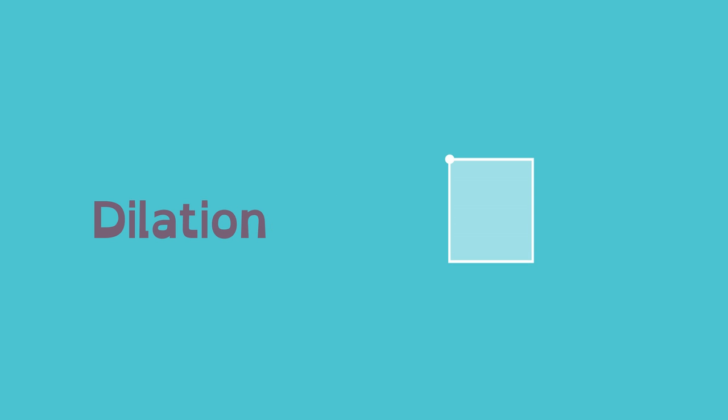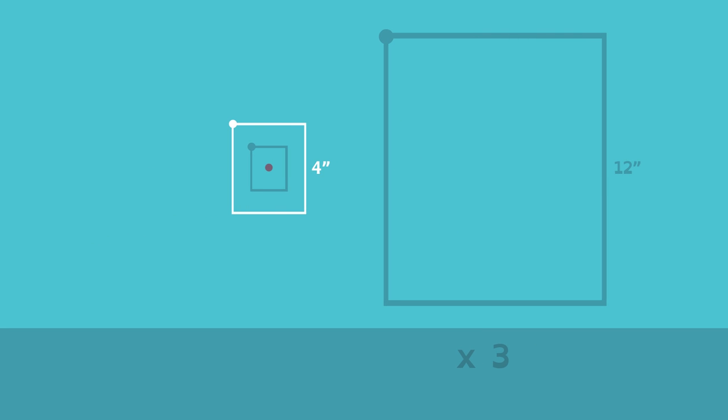Dilation is where a two-dimensional shape grows or shrinks proportionally from a point called the center of dilation. Here we tripled the original rectangle. And here we divided it in half.